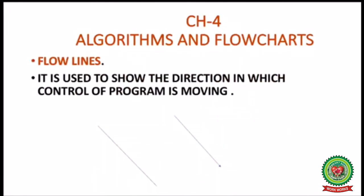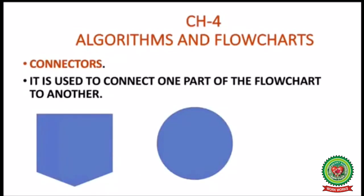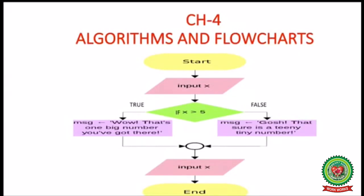Next are flow lines, used to show the direction in which the control of the program is moving. The lines that connect the symbols in a flowchart are known as flow lines. The next is connectors, used to connect one part of the flowchart to another. In this example, you can see a circle — that is a connector which connects one part of the flowchart with the other part.